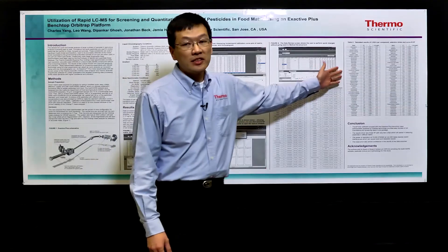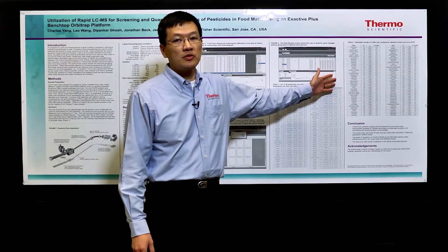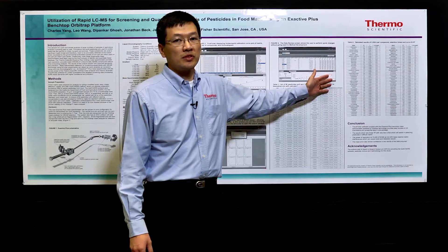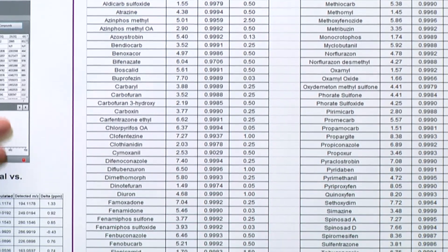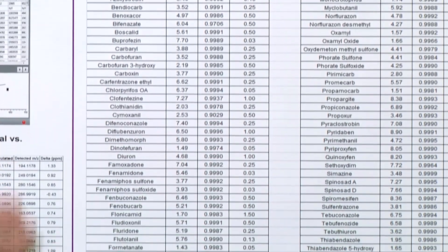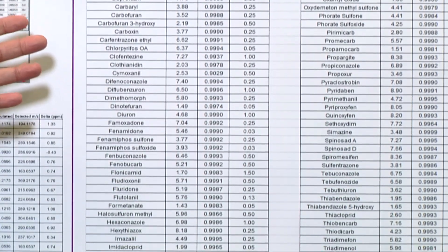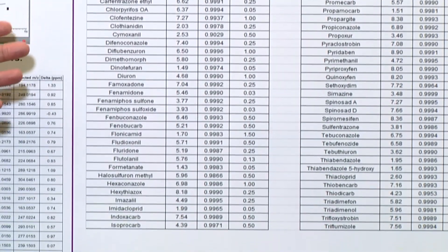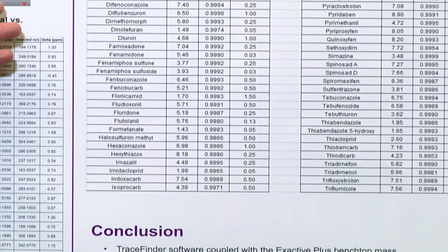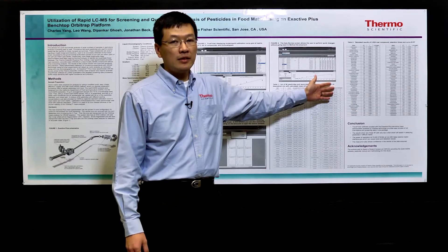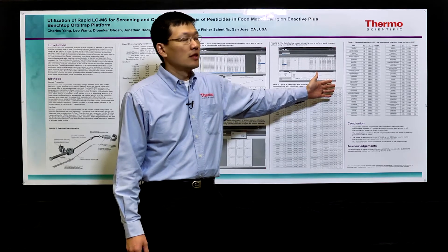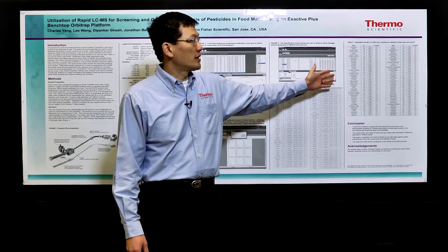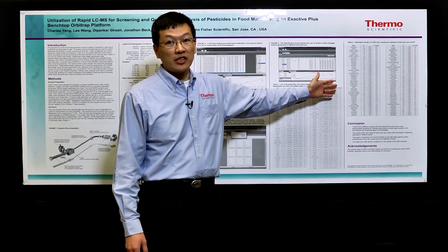On this side we have all the R-squared values for the linear calibration curves. The results show that they are all within the calibrated range of 0.99, as well as the LODs, which are at the lower end detection limits of the compounds.